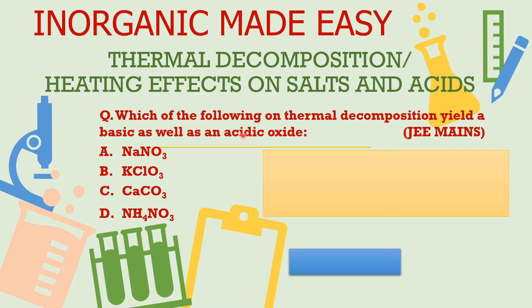So first you should know these compounds, and second you should know what is the effect of heat on them. Looking closely you will find sodium, potassium, calcium, and ammonium as the cations, and nitrate, chlorate, carbonate, and nitrate again as the anions. Sodium and potassium are group 1, calcium is group 2, and ammonium is a cation from the non-metal nitrogen.